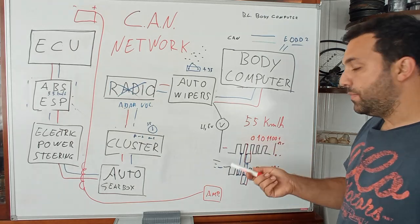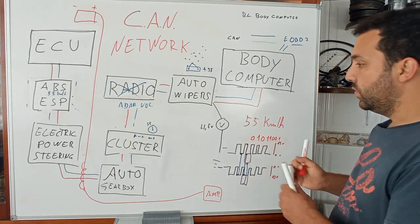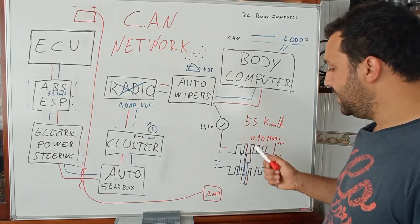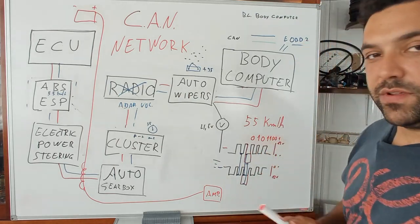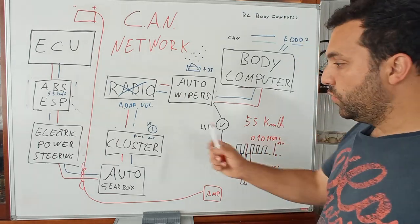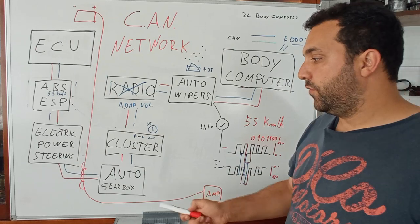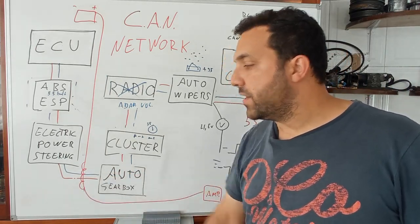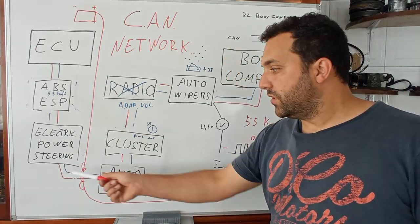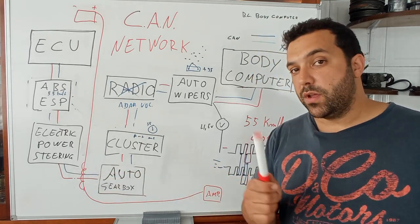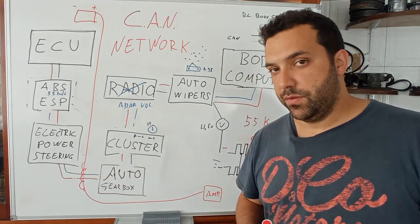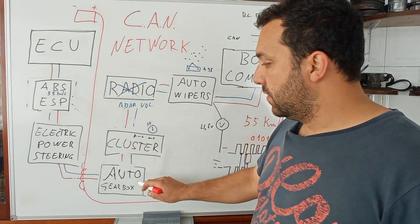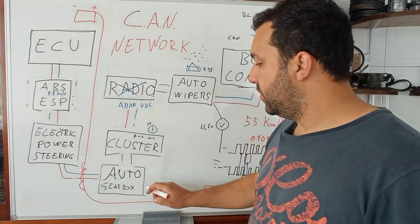Those ones and zeros are binary code — a message that goes between all of these units. This is a very good system: the two wires are there for disturbance immunity, and also if you lose one wire you continue to have the message, with a fault code.